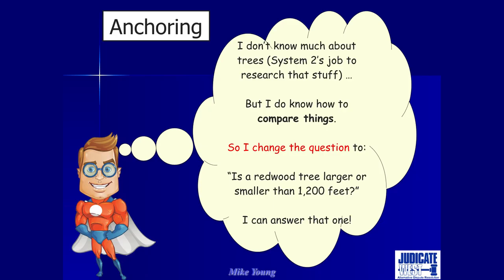So what's going on? System 1 is not very good at deep thinking — it's not going to sit there and try to measure a tree. What it does instead, and is really good at, is changing the question. Instead of answering 'how high is the tree?' it says, 'is the tallest redwood bigger or smaller than 1,200 feet?' It's good at comparing things. It's not good at figuring it out from scratch, but pretty good at comparing — 1,200 feet sounds way too big, so it must be less than that.